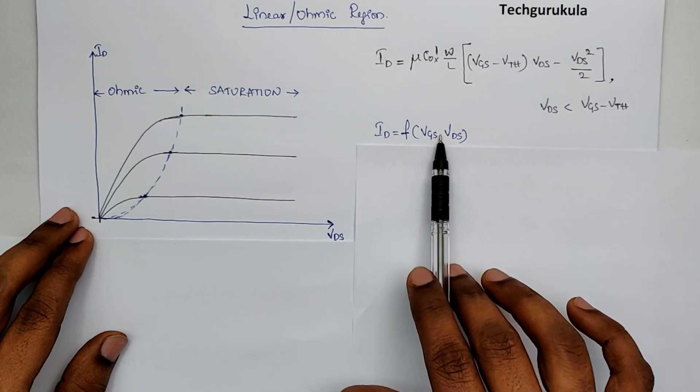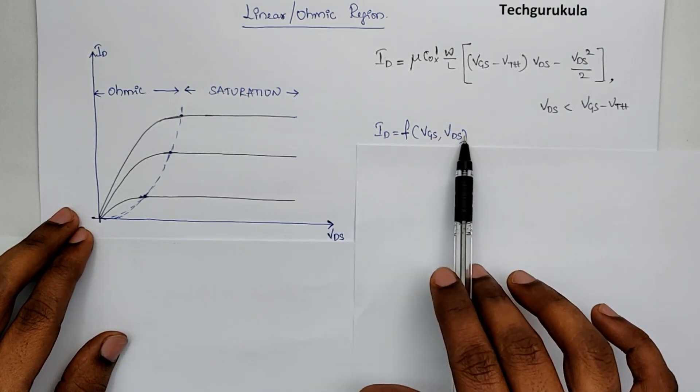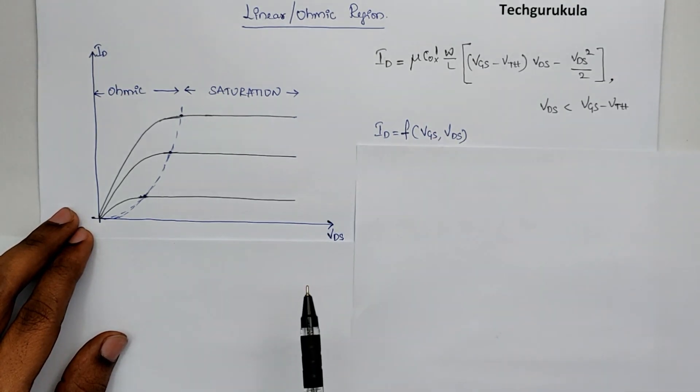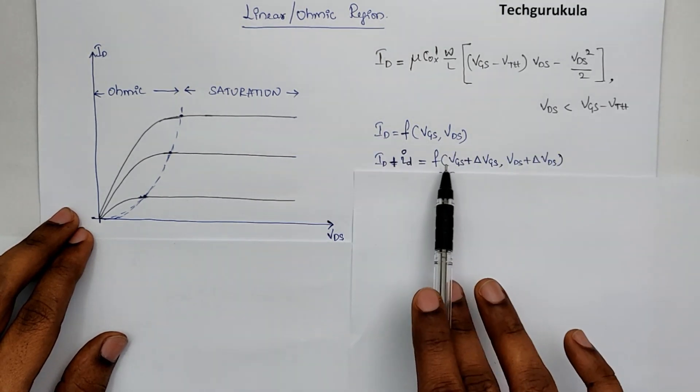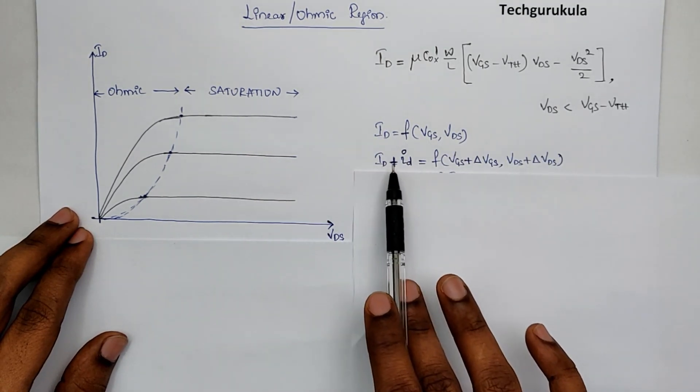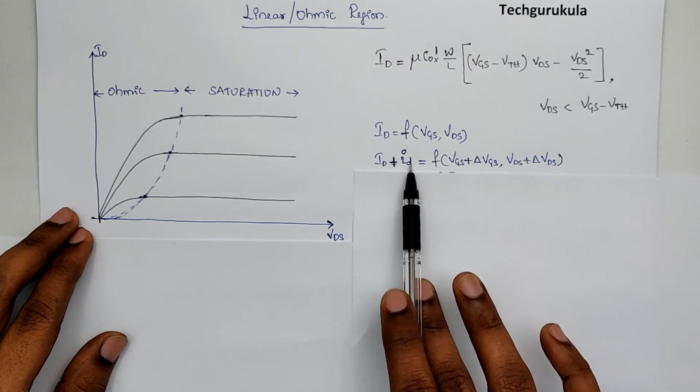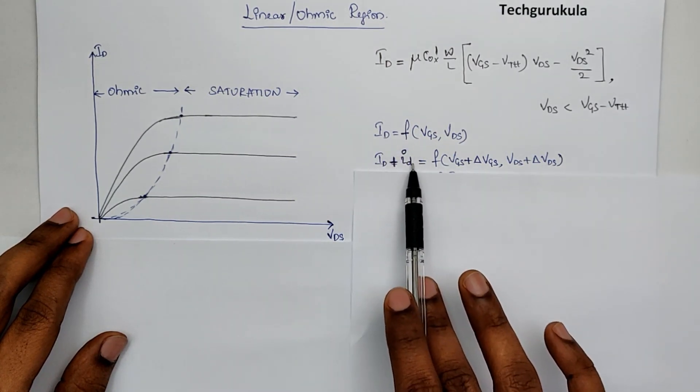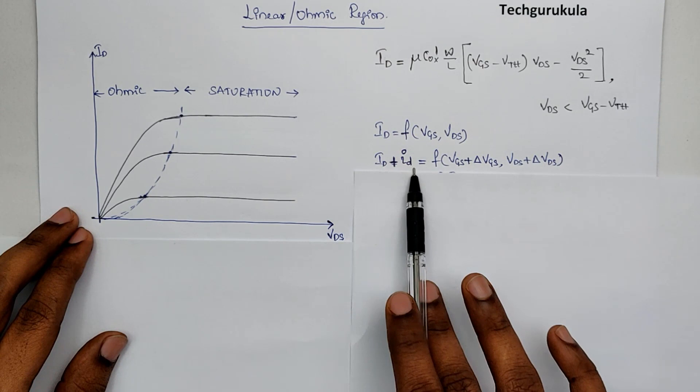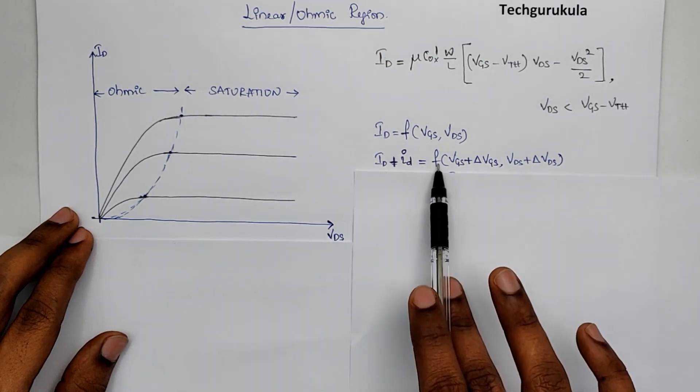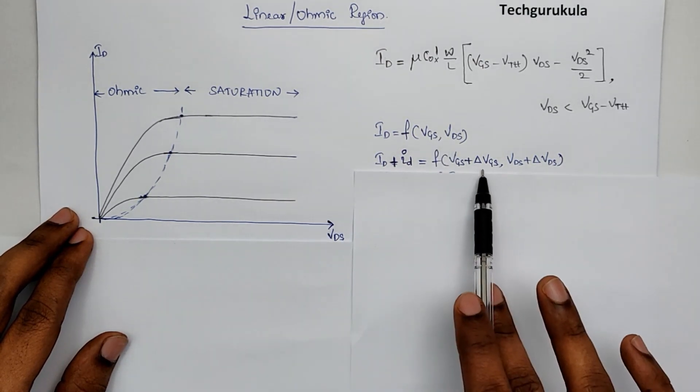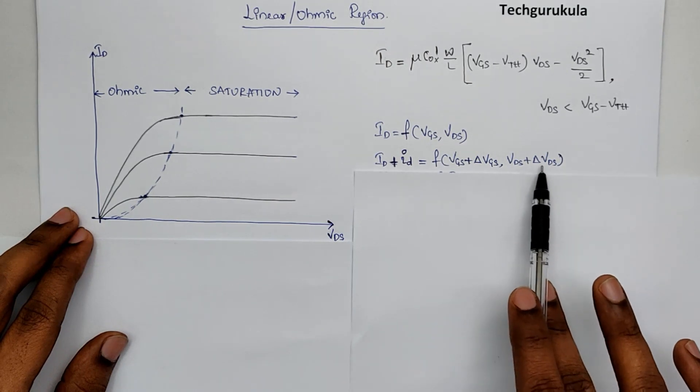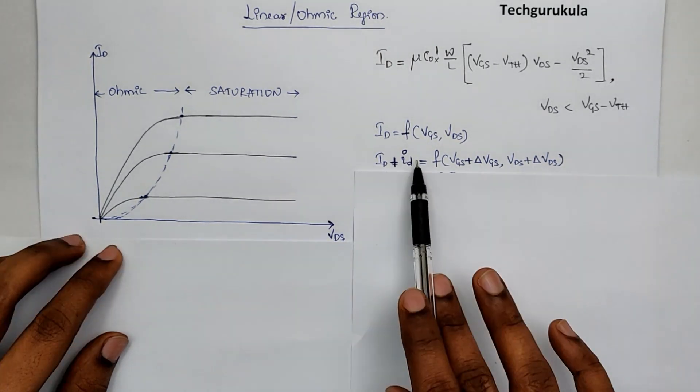Let's say VGS changes by delta VGS and VDS changes by delta VDS. What would happen to drain current? In fact, we can write this ID, which is DC current, plus the small change in the current of this value, which is small ID, is equal to this function, where we have represented delta VGS and delta VDS.